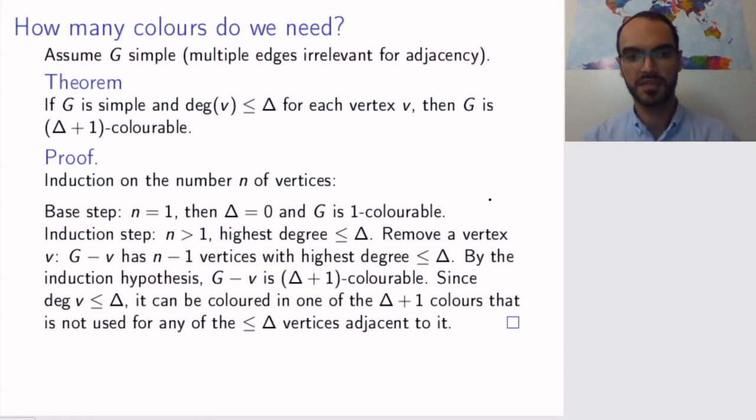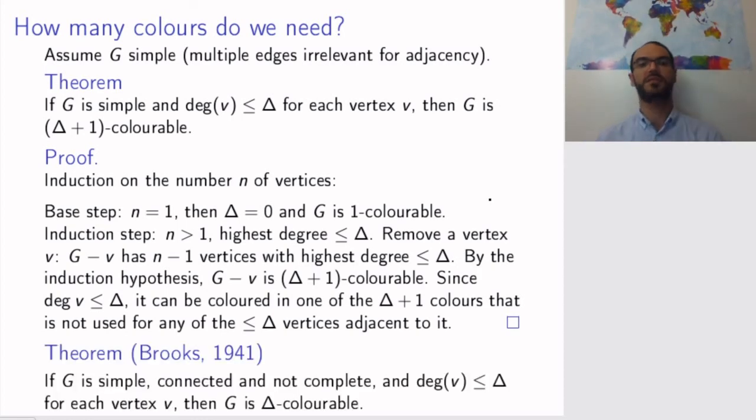This can slightly be improved. There is a theorem by Brooks from 1941 that says if your graph is simple, connected and not complete, and the degree is smaller than or equal to delta—well, here you have to assume that delta is at least three, but it's not a big deal—then G is delta colorable. I'm glossing over this theorem because the proof is hard and we're not going to go through it, but just to show that you can improve slightly. You can actually use one less color than we just proved.